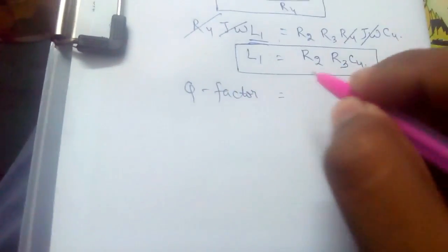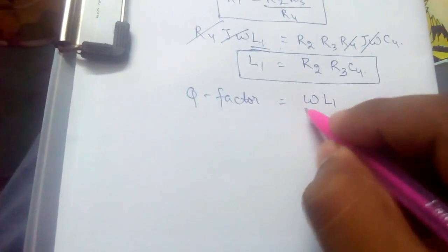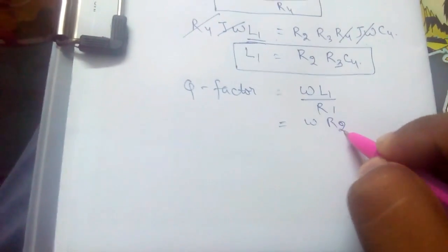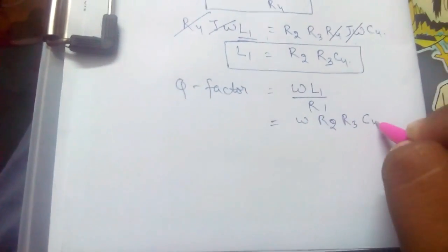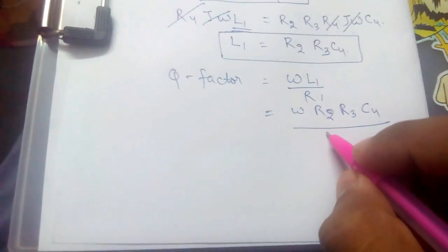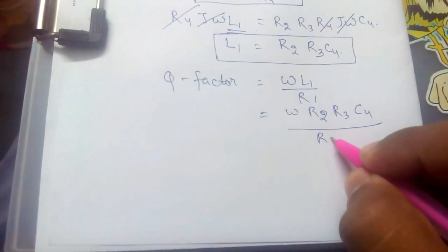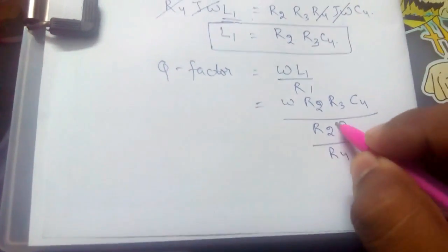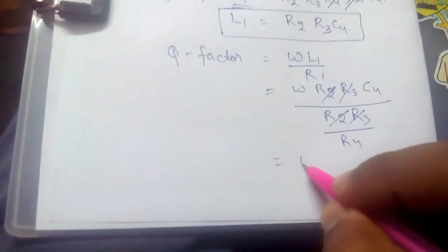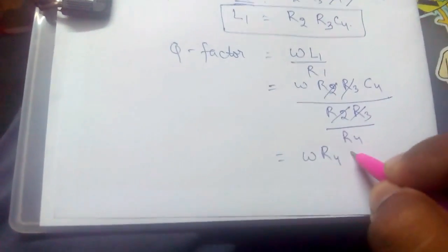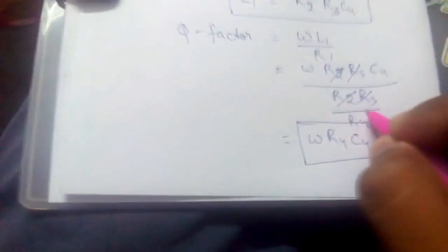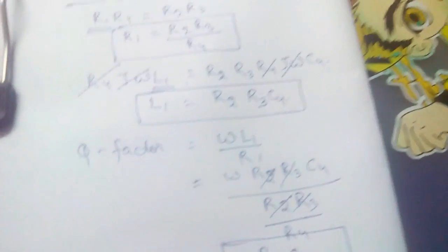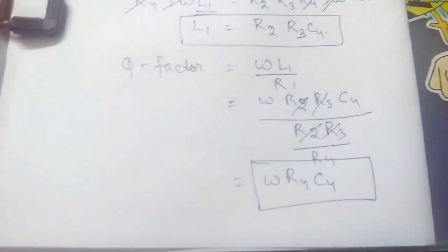Similarly, we can find the Q factor, which is omega L1 by R1. Omega L1 would be R2 R3 C4 divided by R1, that is R2 R3 upon R4. R2 R3 would get cancelled. Therefore, omega R4 C4 would be our Q factor.